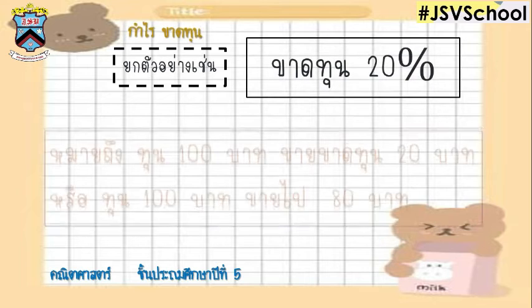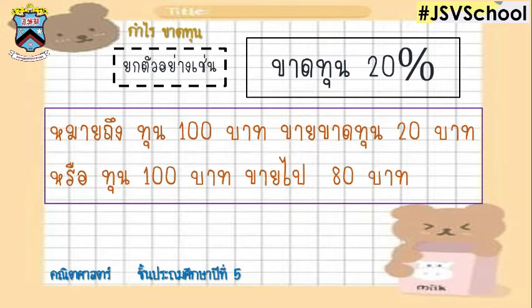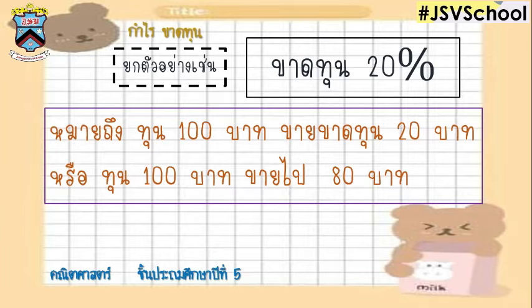20% means what? If we have $100, we will pay $200. Or, if we have $100, we will pay $200.